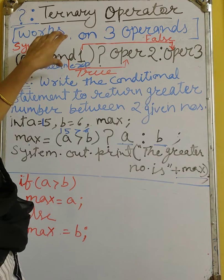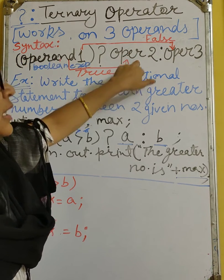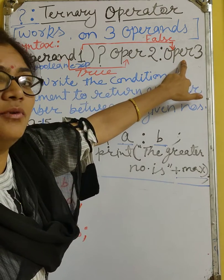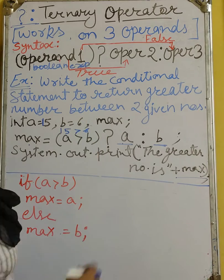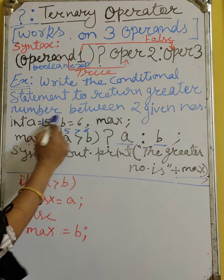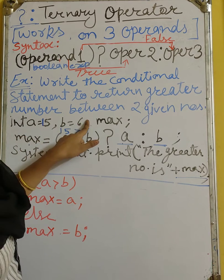So operand 1, boolean expression will be evaluated as true, then operand 2 will be returned, otherwise operand 3 will be returned. Now see the example: write the conditional statement to return the greater number between two given numbers. A equals to 15, B equals to 6.